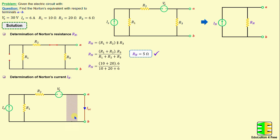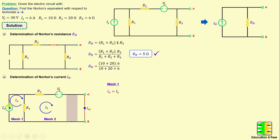To find the short circuit current Isc, I will apply the mesh analysis method. There are two meshes: mesh number one and mesh number two. IA is the current in mesh one and IB is the current in mesh two. In mesh one we can write IA is equal to Is, that means IA is equal to 6 amps.